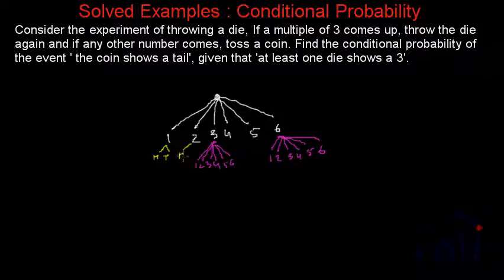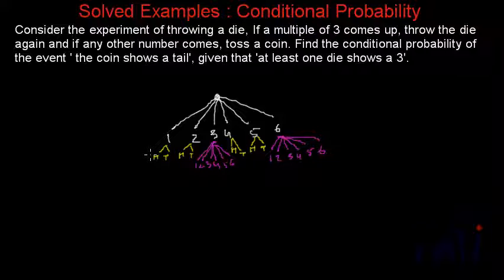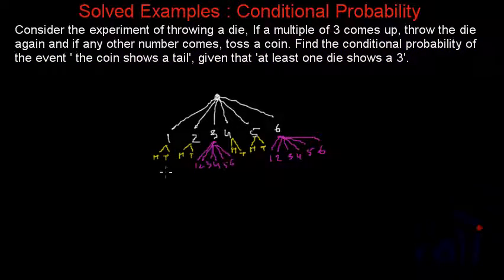Here also we can get either a head or tail, and here also we can get either a head or tail. Now what we have to do? Find the conditional probability of the event — the coin shows a tail — given that at least one die shows a three.